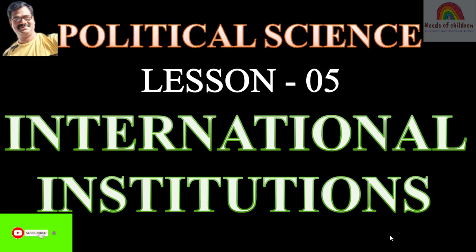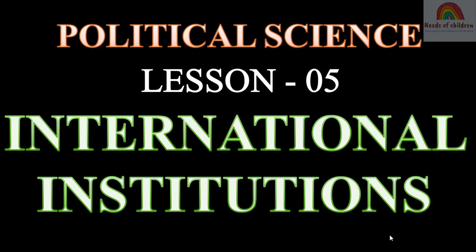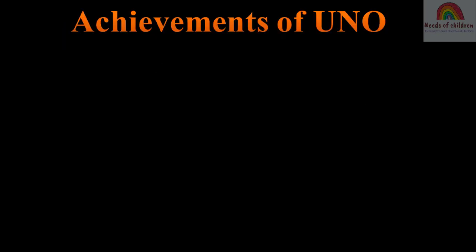Hi, hello, Namaste. Welcome back to Needs of Children. Dear students, we are discussing about the political science lesson number 5, the continued part of International Institutions. In the previous session, we got information about the introduction to the United Nations Organization, aims of UNO, and UN Affiliated Bodies. In this video, we are going to get the continued part of International Institutions — achievements of UNO.